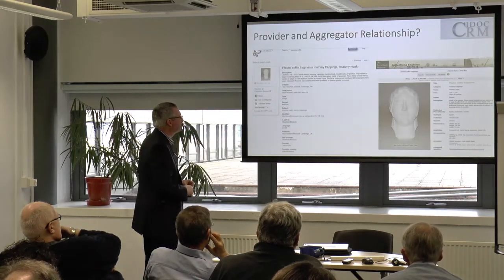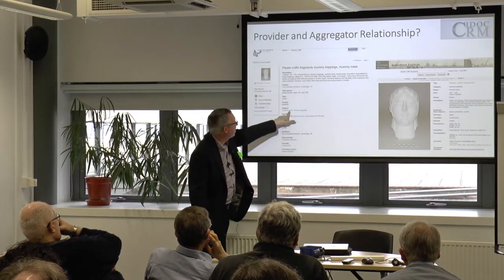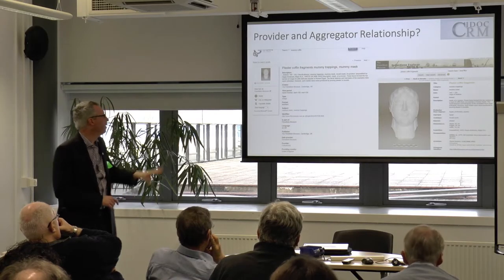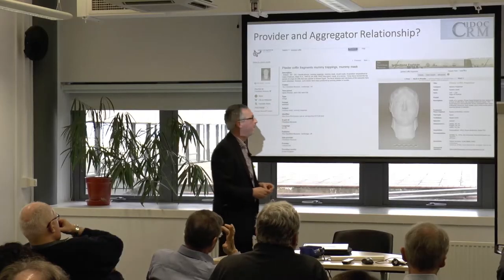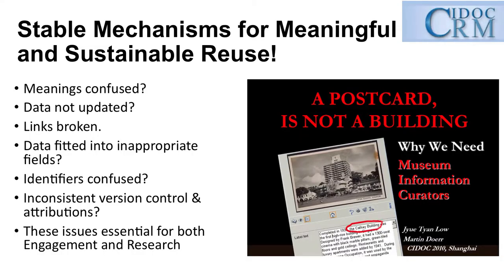Another example from the Fitzwilliam Museum in Oxford — again, type 'image' appears, and subject 'mummy mask' is really coming from an object type field. Data has been squeezed into the description because they couldn't put it into structured data. There's no expertise in explaining to organizations how to actually put data into the ontology in the first place — which is why it's not just about ontologies and technology, it's also about people understanding and learning how to do this. Meanings are confused, data is not updated, links are broken, data is fitted into inappropriate fields, and identifiers are confused with inconsistent version control. These issues affect the way we do research projects and are not good for engagement.